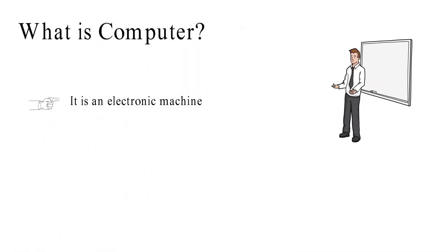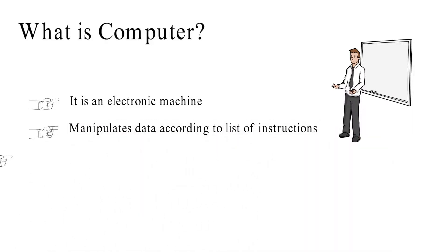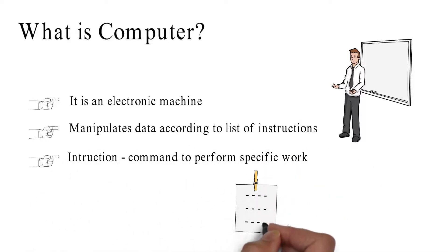Computer is an electronic machine which manipulates data according to a list of instructions. An instruction is a command given to the computer to perform specific work.